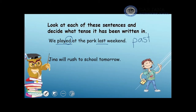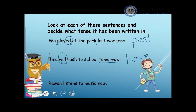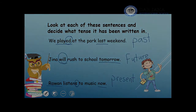'Gina will rush to school tomorrow.' I have the clue word 'tomorrow,' which refers to the future. Another word that helps me figure out the future tense is 'will.' The last example: 'Rowan listens to music now.' I have the clue word 'now,' which refers to the present. Also, Rowan is one person, therefore I add 's' to the verb to show the present tense.